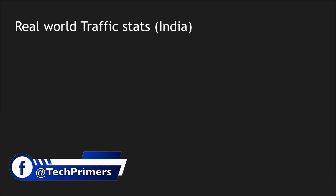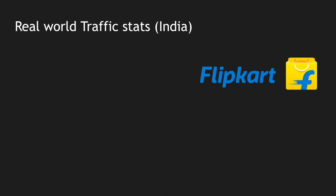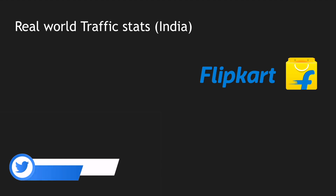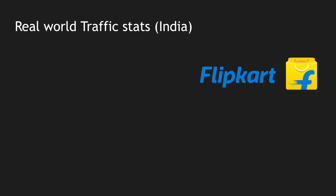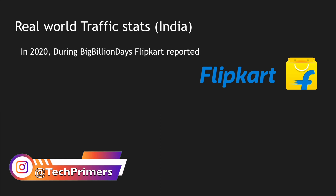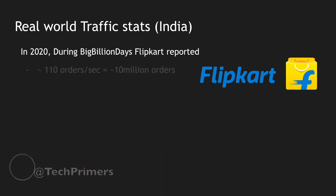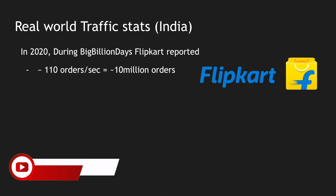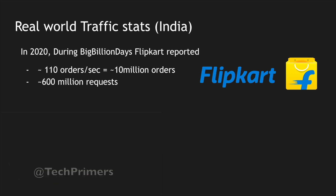Let me show you real-world traffic stats, especially in India. I'm going to use Flipkart as an example — Flipkart is a traditional e-commerce platform in India, similar to Amazon. In 2020 during the Big Billion Day sale, Flipkart reported they were able to process 110 orders per second, approximately 10 million orders, with 600 million requests during that event. Big Billion Day is similar to Amazon Prime Day — this is what a flash sale looks like.